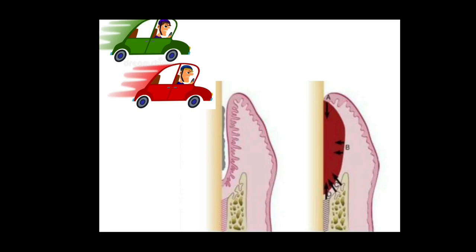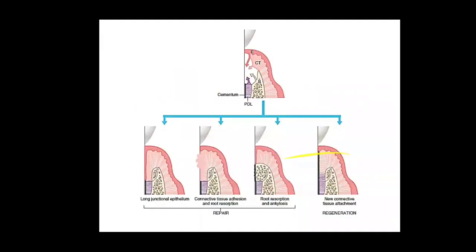If the epithelial cells repopulate, then it forms the long junctional epithelium. If the connective tissue cells of gingiva comes, then connective tissue adhesion with parallel fibers form.